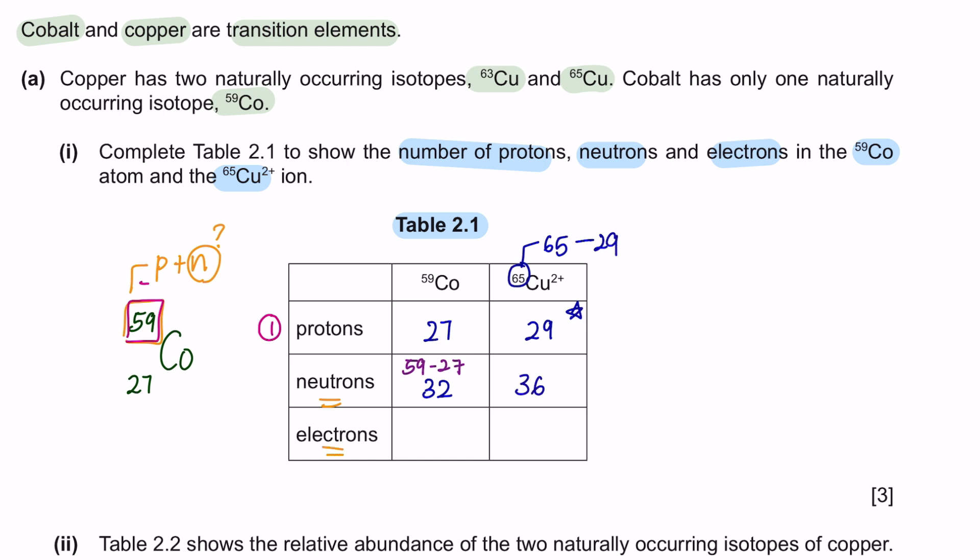Lastly, we're going to look for the electrons. What you have to remember is that for an atom, the proton number is equal to its electron number. However, for ions, the proton number is not equal to the electrons number because an ion means that it has either donated electrons or gained electrons. There are no charges in cobalt, meaning this is an atom. The proton number and electron number will be similar, so 27. Next, we've got copper 2 plus. 2 plus means that it has donated 2 electrons. Initially it had 29, after donating 2 electrons, now they are left with 27 electrons.